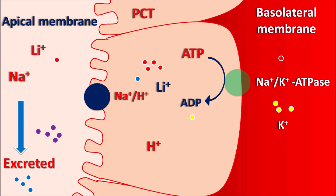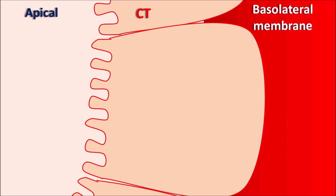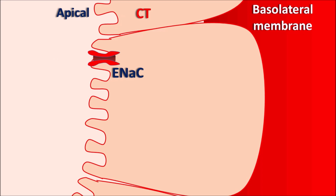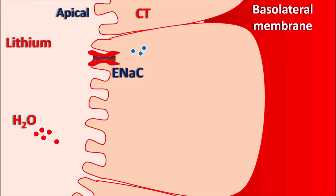At the collecting tubules, lithium shows another activity. The apical membrane expresses epithelial sodium channels (ENaC), through which sodium enters the renal tubules to be reabsorbed into systemic circulation. Lithium competes with sodium and can enter the collecting tubular membrane through these epithelial sodium channels. For reabsorption of water at the collecting tubules, vasopressin acts on V2 receptors, which are G-protein coupled receptors with alpha, beta, and gamma subunits.